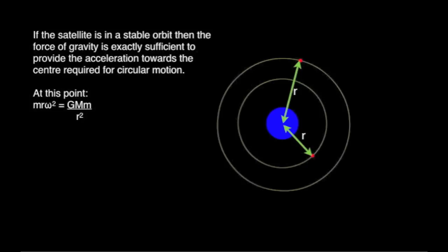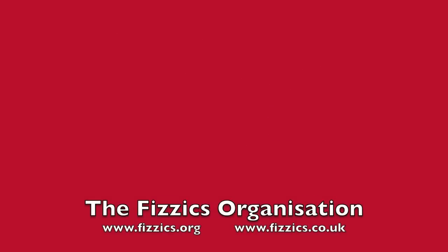The force required to maintain circular motion is mr omega squared, where omega is the angular velocity. Lowercase m is the mass of the satellite, r is the radius of its orbit from the centre of the Earth, g is the universal gravitational constant, and uppercase M is the mass of the Earth.